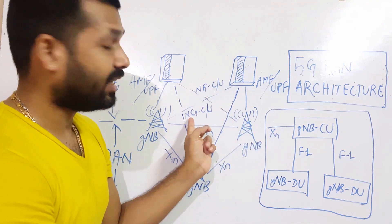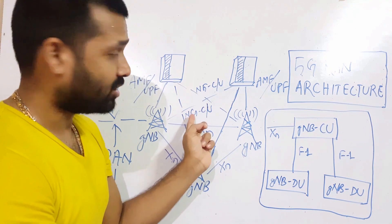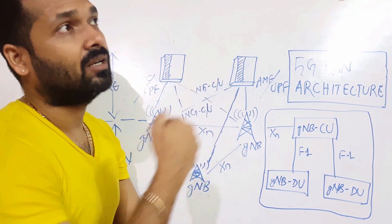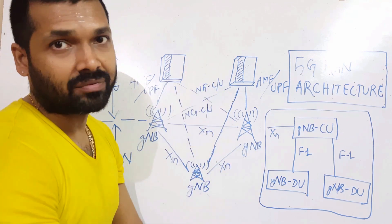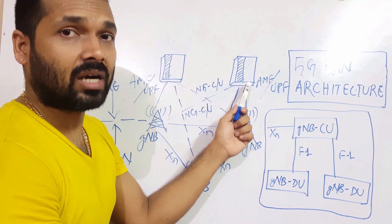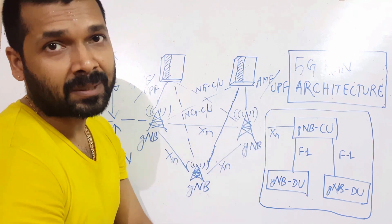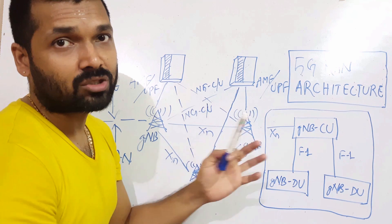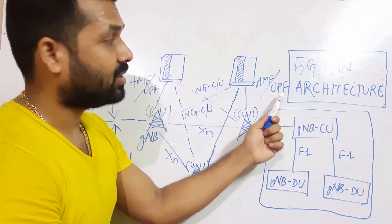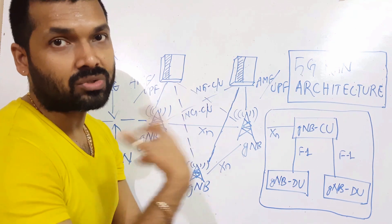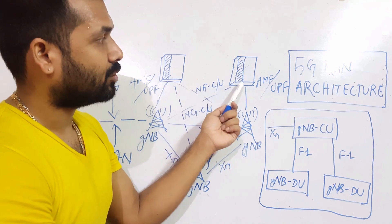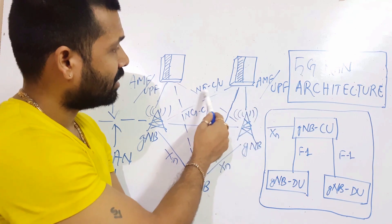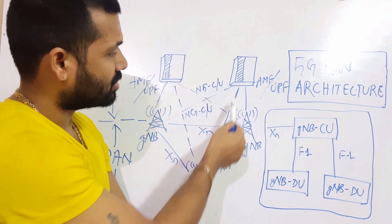The interface connecting the RAN to the core is called the NG interface — next generation interface. NG-C is for control and signaling, and NG-U is for user plane traffic. At the core end, we have two important entities: AMF (Access and Mobility Function), which manages access and mobility, and UPF (User Plane Function), which handles user plane data transfer. These are connected to gNodeB via the NG-C and NG-U interfaces.